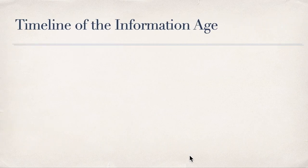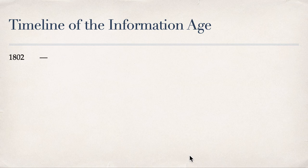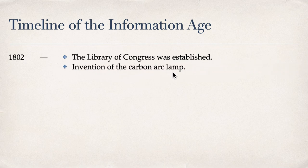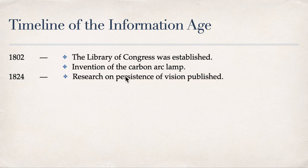Moving on to 1802: the Library of Congress was established, and also in the same year, the carbon arc lamp was invented. In 1824, about 22 years later, research on persistence of vision was published.